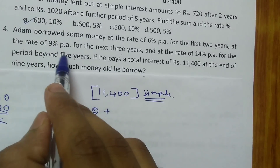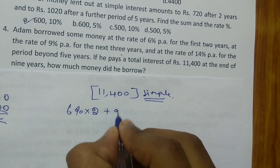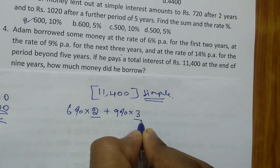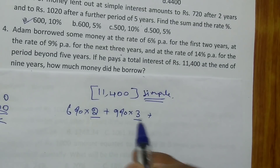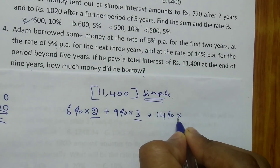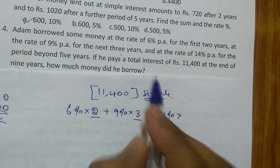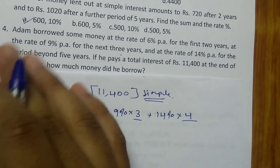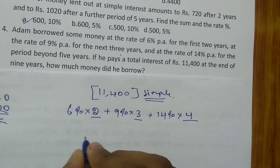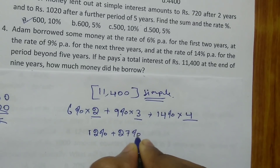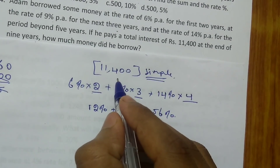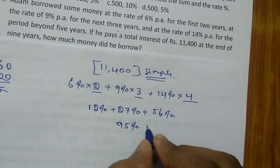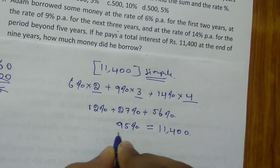For the next 3 years at 9%: 9 into 3 = 27%. After 5 years the remaining period is 4 years at 14%: 14 into 4 = 56%. Adding all: 12% + 27% + 56% = 95%. It is clearly stated that the total simple interest is Rs.11400, so 95% = Rs.11400.